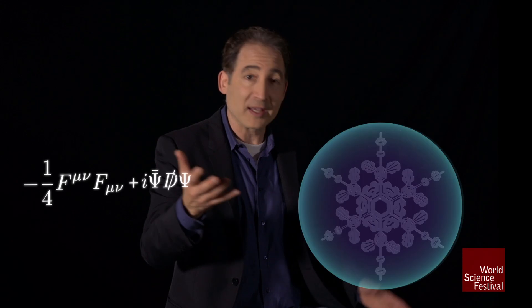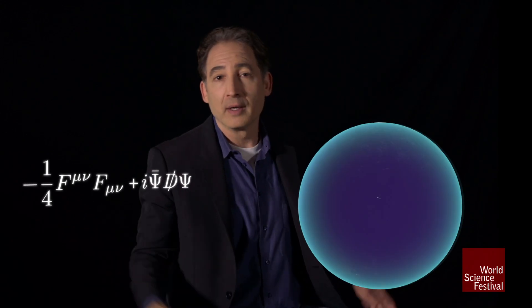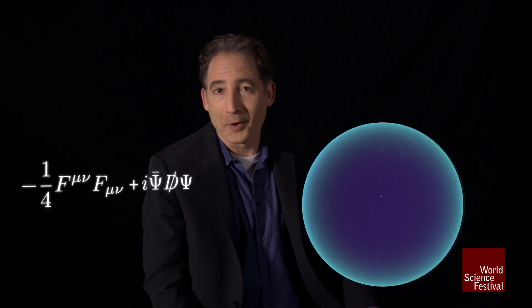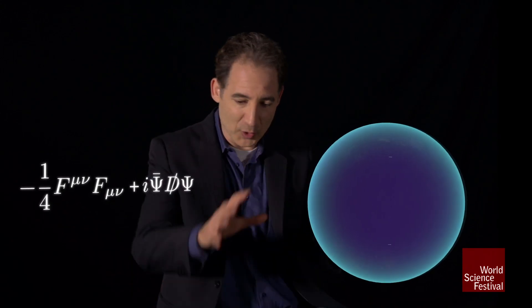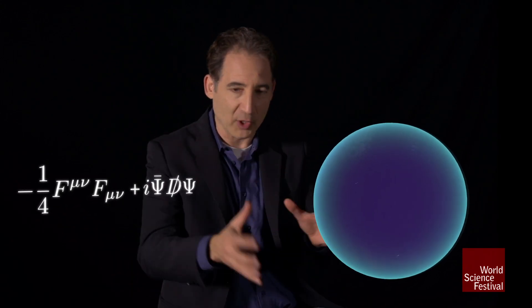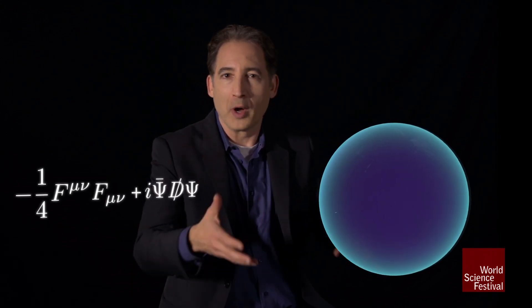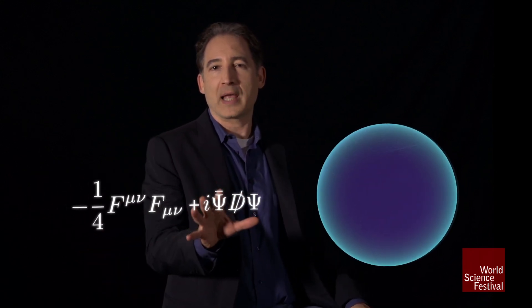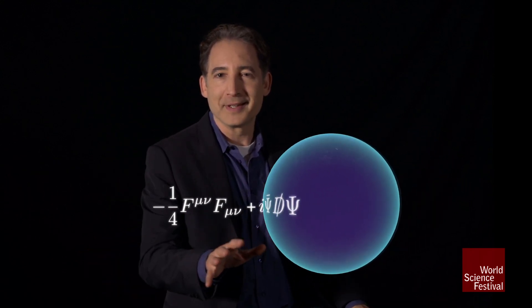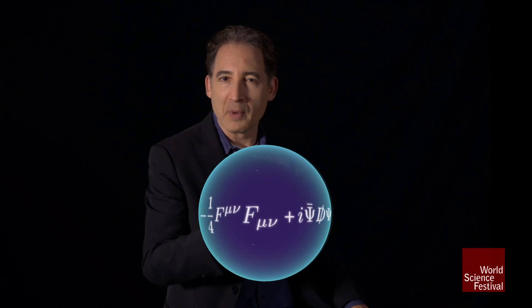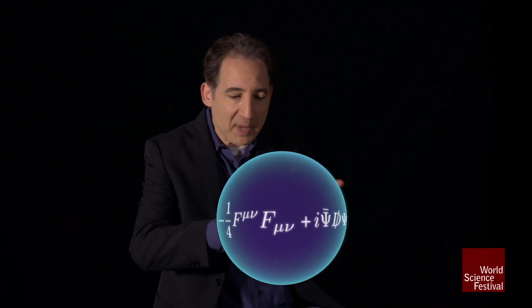If you take a sphere, that's even more symmetric. As you rotate a sphere, regardless of what angle you rotate it through, it looks the same. Similarly, the basic equations had a built-in symmetry much like that.